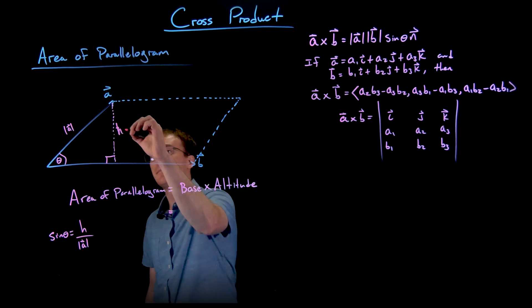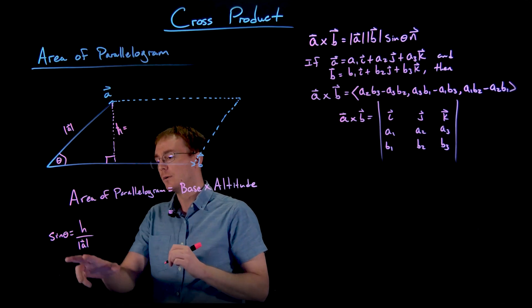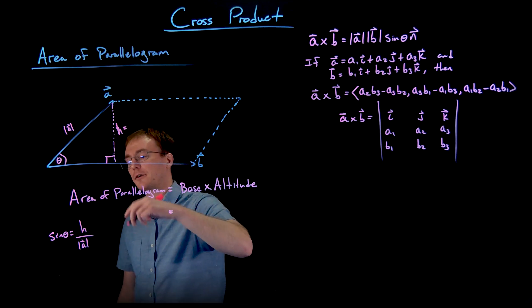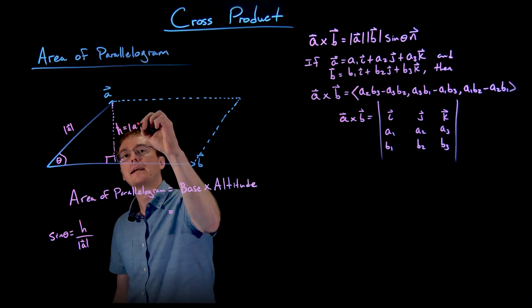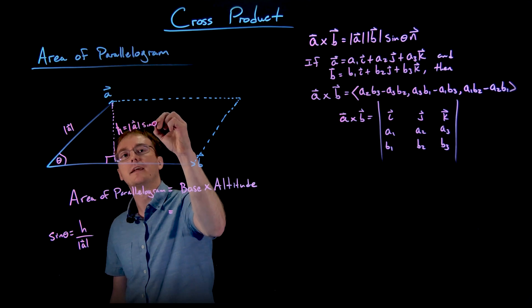So multiplying both sides by the magnitude of our vector A, we can see that the height of our parallelogram really is just the magnitude of A times sine of theta.